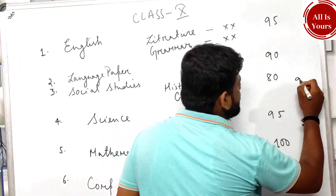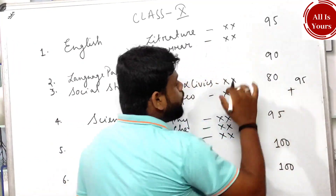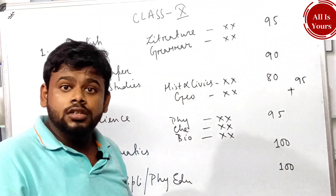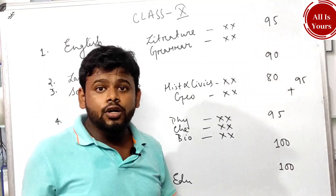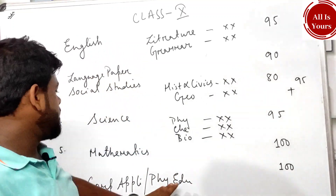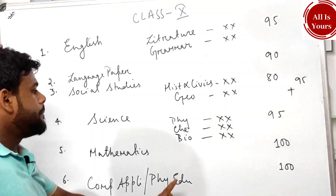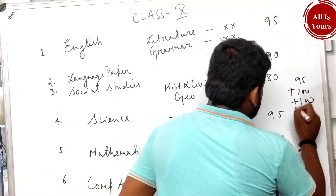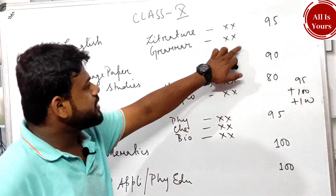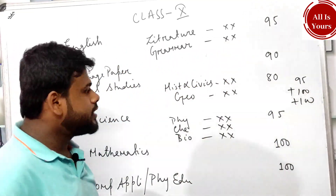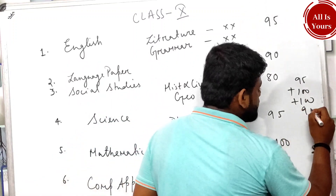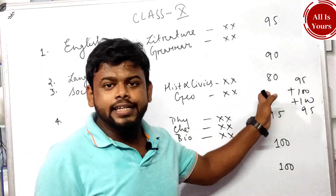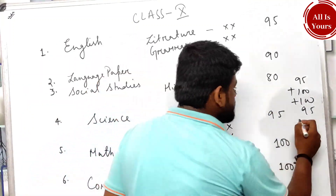English is 95, so that is one subject included. Then from the remaining subjects — Computer Application 100, Mathematics 100, Science 95, Language paper 90, Social Studies 80 — I will take the top marks. After English (95), I take 100, 100, 95, and then 90 over 80, because 90 is the better mark. I will never take 80 when 90 is available.